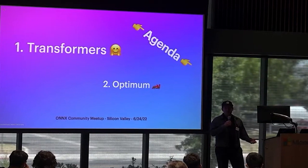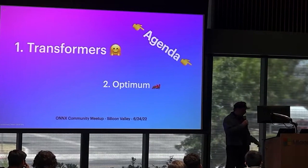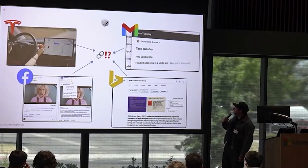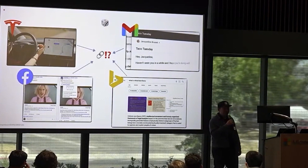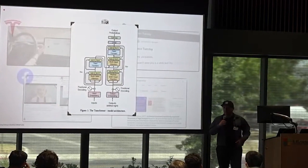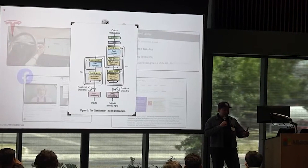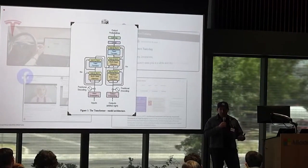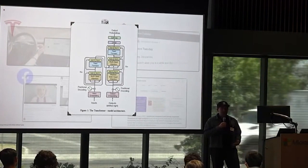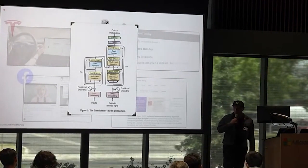I'll then talk about Optimum — why we built a specific library focused on accelerating Transformers models. But first, a little trivia: what do Tesla, Gmail, Facebook, and Bing all have in common? The answer is Transformers. The point is that very few companies in the world can make billions of predictions per day using Transformers — Gmail's autocomplete, Tesla Autopilot, Facebook translation, and Bing search.